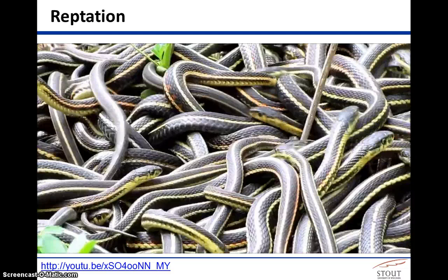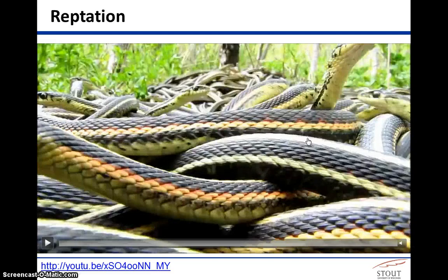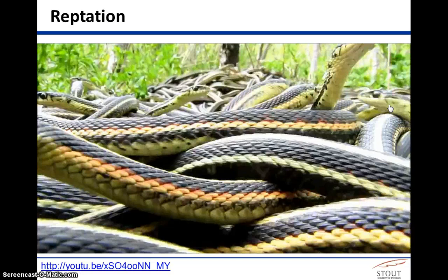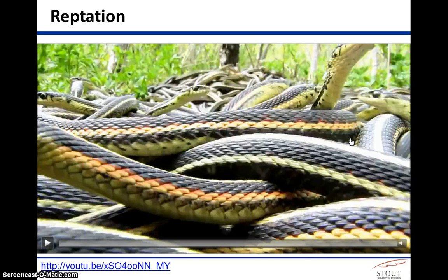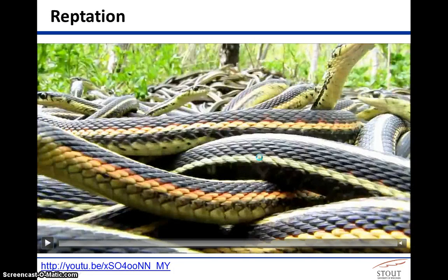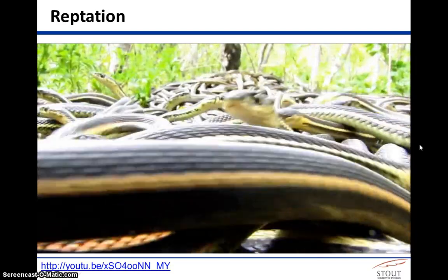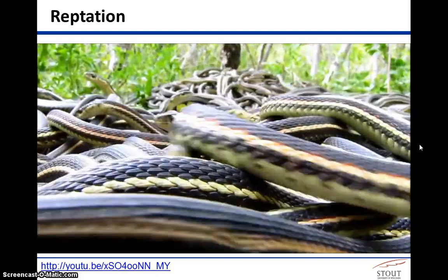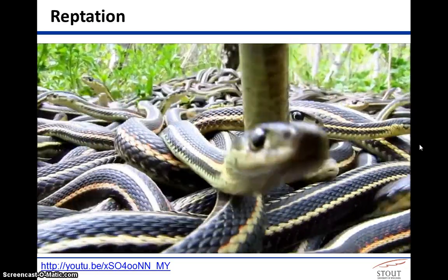The next video gives a slightly different perspective, taken from the perspective of being down in that pit of snakes, so you get kind of that horizon. If we could take a cross-section and see the surface of a polymeric material, that is somewhat what it would appear to be. We're now kind of down in that melt, observing these polymer chains going past our vantage point. This is reptation.